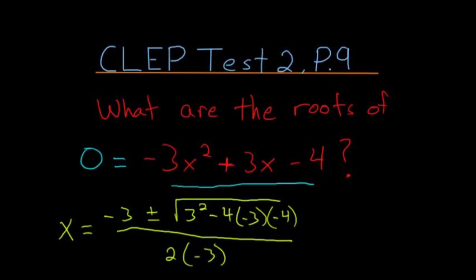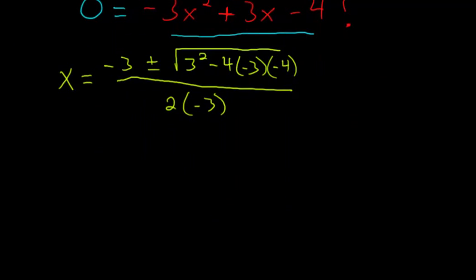Now we just have to simplify this. Rewriting this, we have x equals -3 plus or minus the square root of 9. And then we have 3 negatives, so we'll be left with 1 negative. And then 4 times 3 is 12, times 4 is 48. And then this is divided by -6.